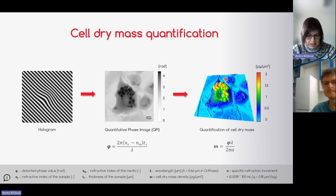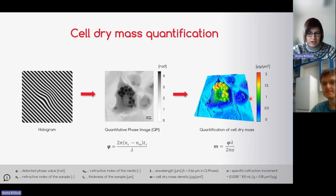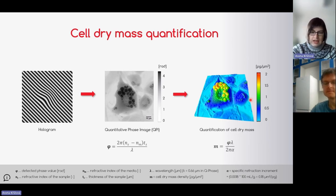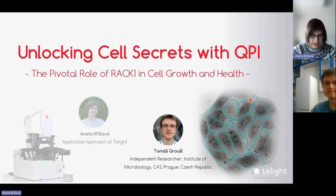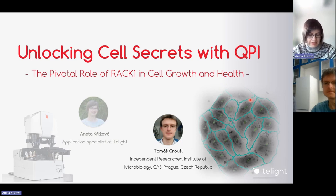This is the main advantage of the Q-Phase microscope — it provides quantitative images where each pixel carries information about the light delay and therefore can be recalculated to cell dry mass, a real characteristic of the cell, all without any labels and in real time during the imaging process. Now I would like to pass the word to Tomáš Grošl, who will tell us how depletion of the RAC1 protein affects kidney and fibroblast cells.